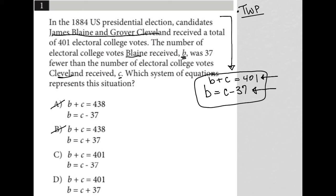Choice C says B plus C equals 401. So that checks with what I have here. And then the second part of that also says that B equals C minus 37, which also checks with what I have here. So choice C is therefore the correct answer.